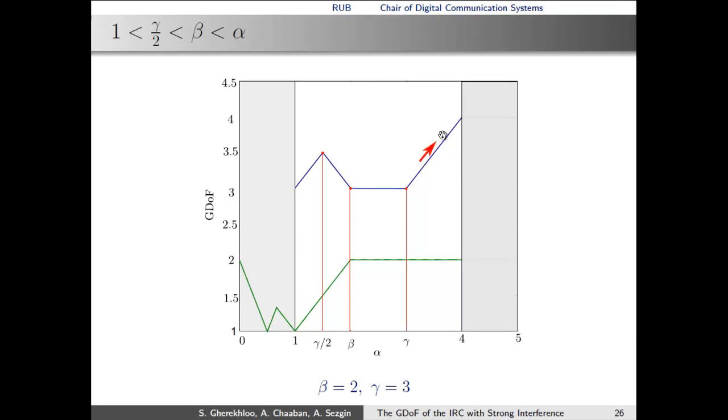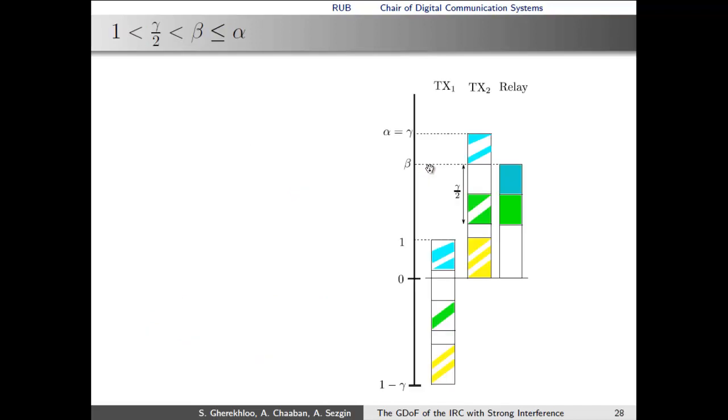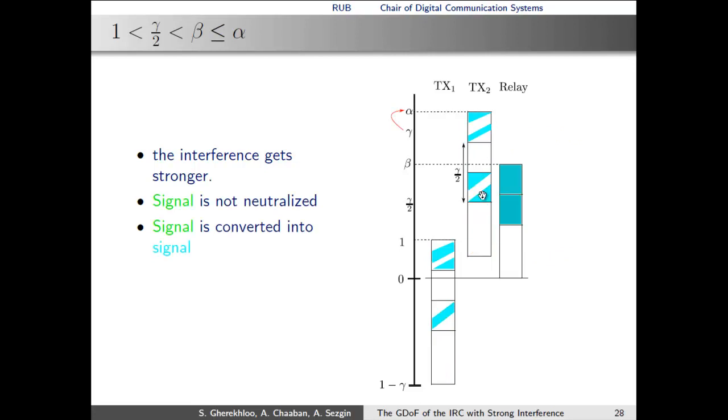In this regime, in which the GDoF increases here, the interference is so strong that we are able to cancel the interference completely. In more detail, here again we have the case where alpha is equal to gamma. Now, if we move beyond this point where alpha is equal to gamma, we are not able to neutralize interference anymore. Instead, we replace this green signal by a larger cyan block, as done here. The blocks can be moved down and up, such that we have no overlapping here. But now we observe that there's a larger block unused. And then we can increase the size of the blue block, by ensuring that we have no overlap. This increases the GDoF, and this is shown here.